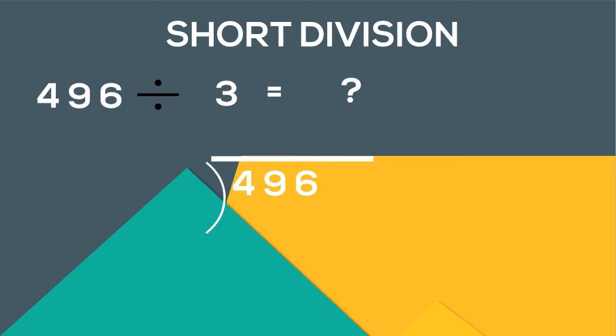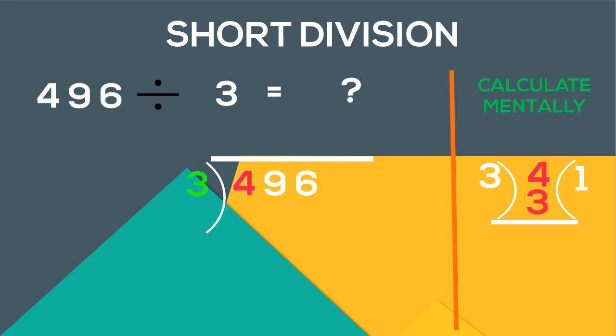Then we will take the first number here, 4, and see how many times 3 goes into it. 3 goes into 4 one time. So we write 1 on the top and the remainder 1 in the bottom, as 4 minus 3 is 1.